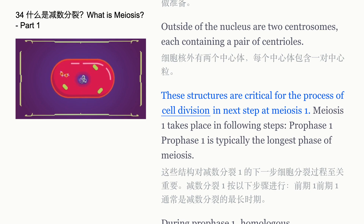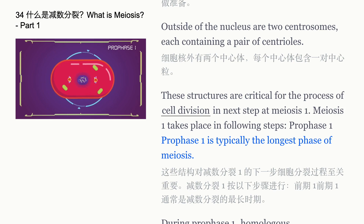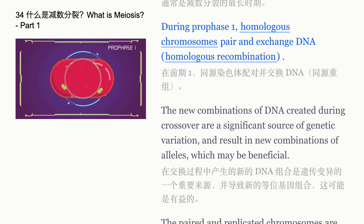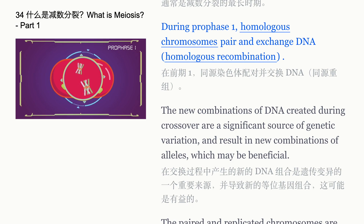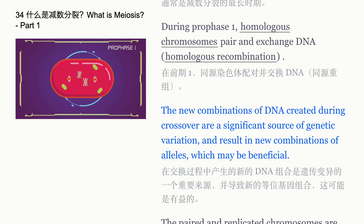In the next step, meiosis 1 takes place in the following steps. Prophase 1 is typically the longest phase of meiosis. During prophase 1, homologous chromosomes pair and exchange DNA through homologous recombination. The new combinations of DNA created during crossover are a significant source of genetic variation and result in new combinations of alleles, which may be beneficial.